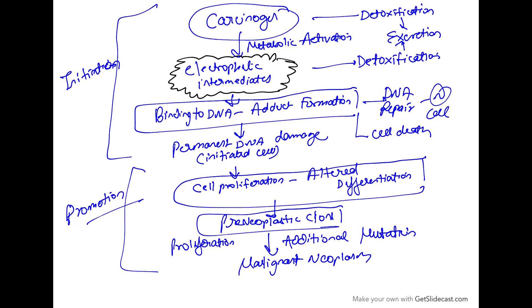Looking at this diagram, we have a carcinogen which could be directly acting or could require metabolic activation to become an electrophilic intermediate. This will bind to the DNA and form adducts, causing permanent DNA damage — so this will be an initiated cell. The carcinogen or its intermediate could also be detoxified and excreted, and the DNA adduct which is formed could undergo DNA repair, allowing the cell to return to normal.